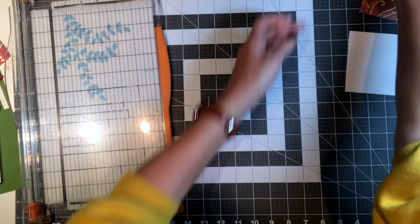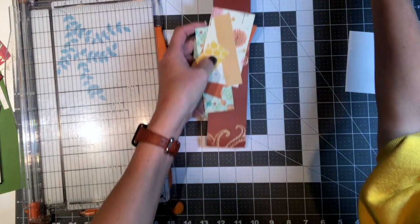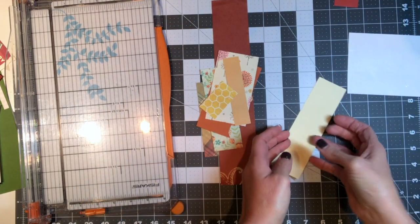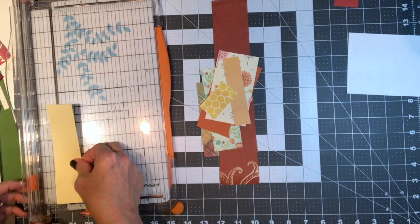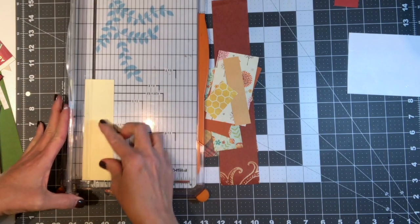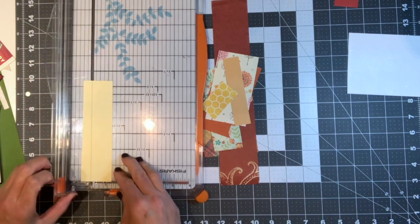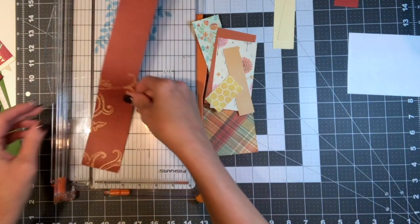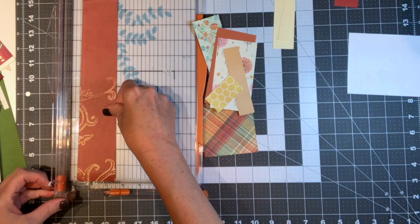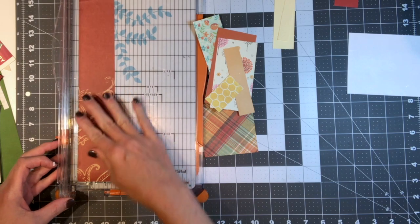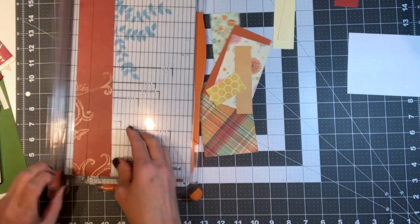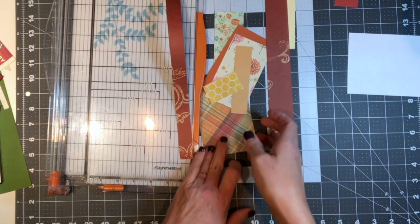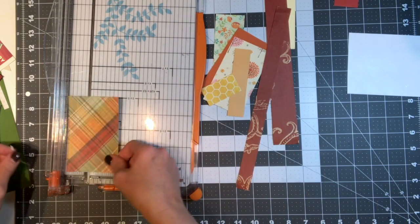So I'm going to go back to my scraps that I pulled out of my stash. And like I said before, I tried to choose a bunch of fall colors that I thought somewhat matched. And you want some variance in your width of your strips. You want some thicker, some thinner strips. And you will also need some long and some short.